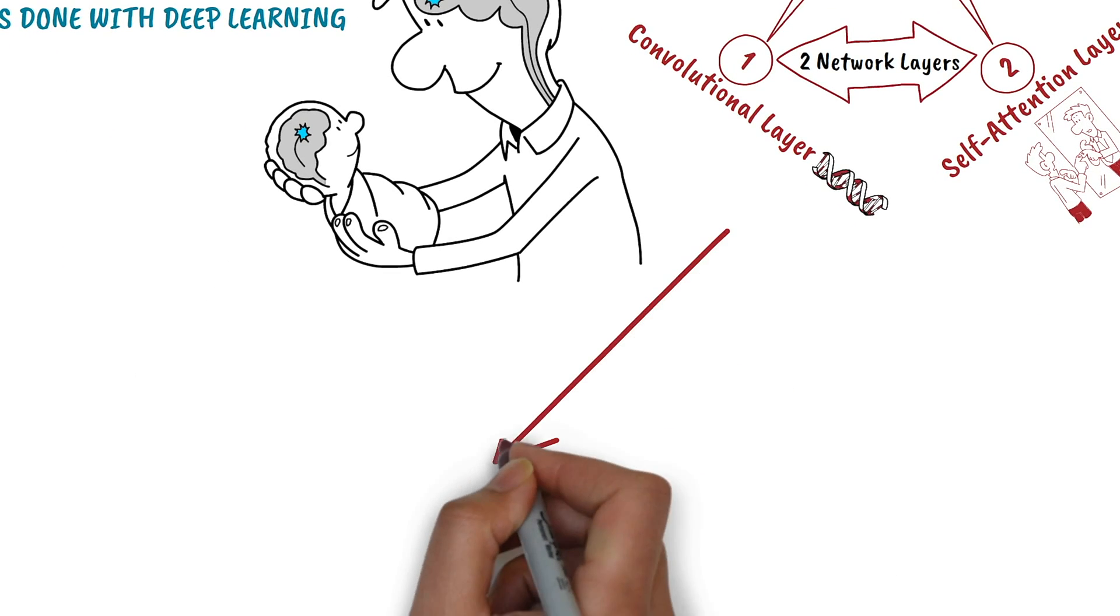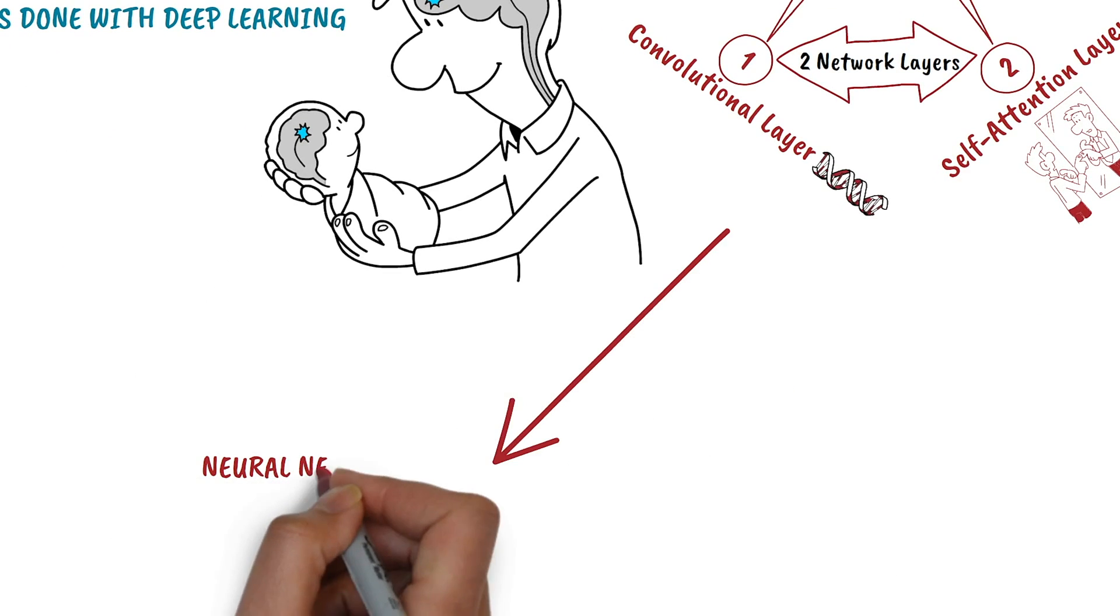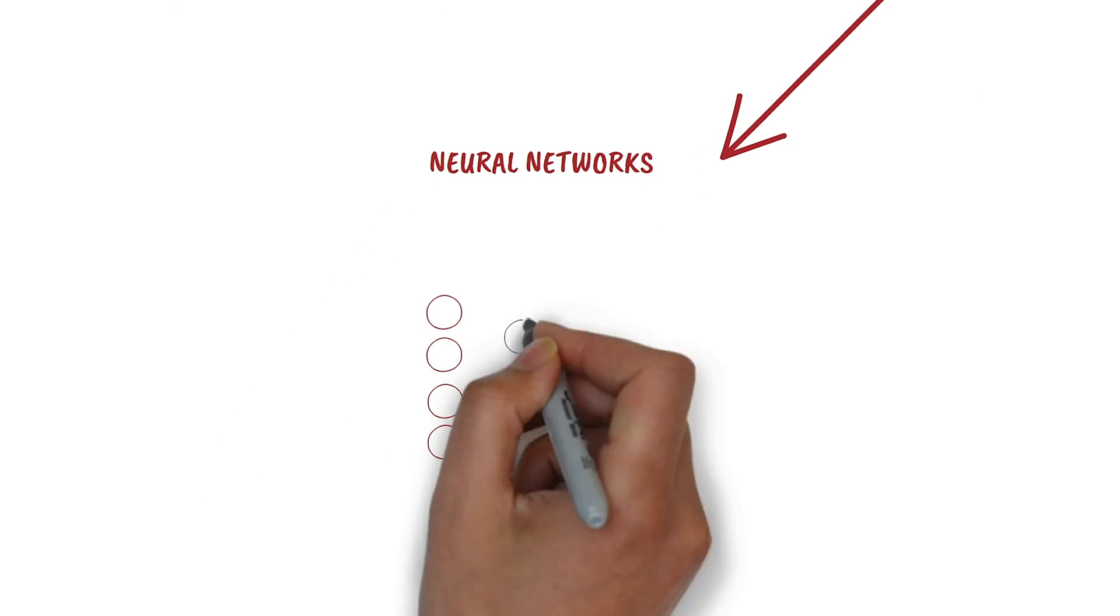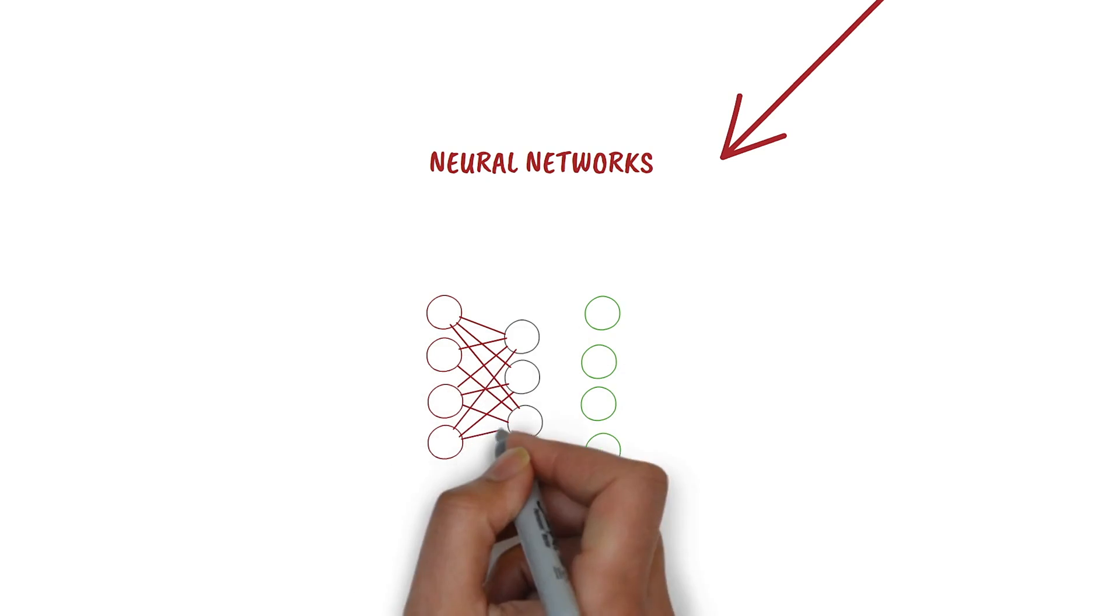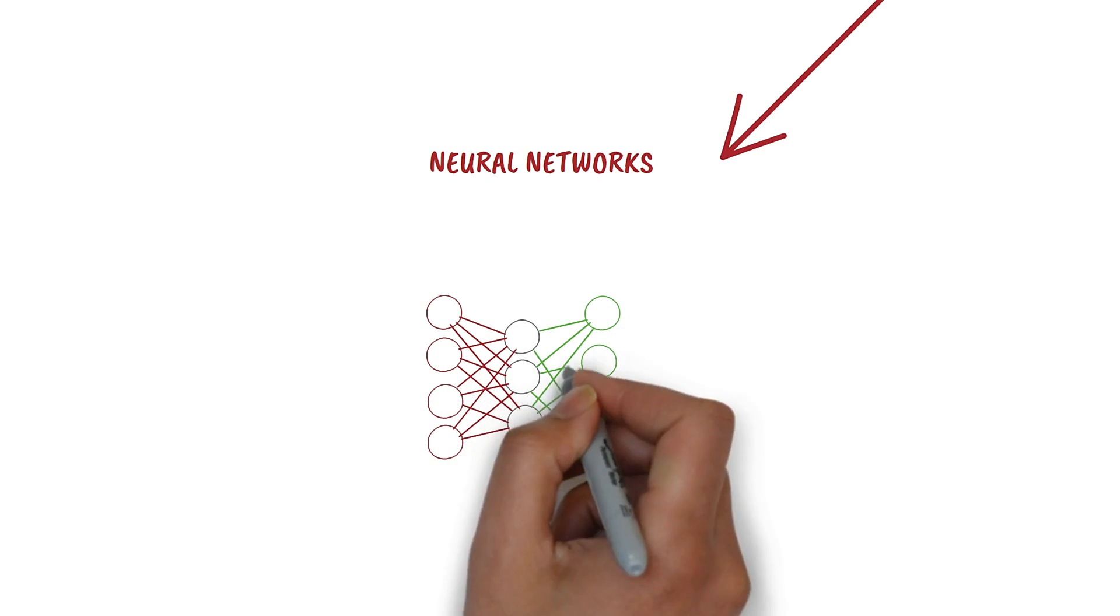Now some basic things about neural networks, to give you a better understanding. Neural networks consist of neurons, which are connected to each other across different layers. We could somehow compare it with the human brain.